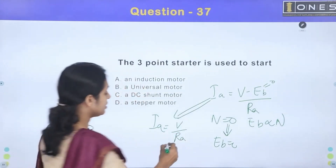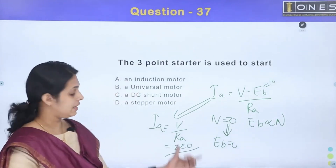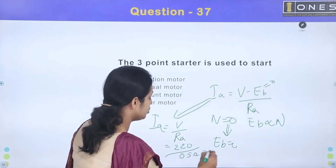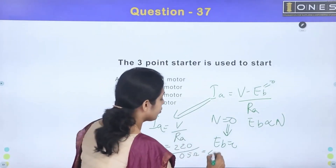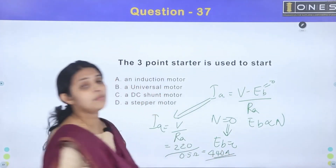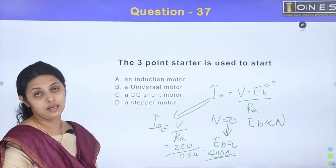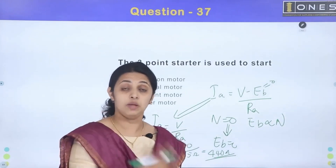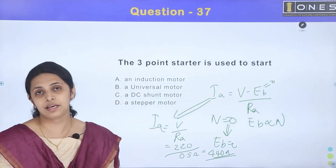For example, if supply voltage is 220V DC and armature resistance is 0.5 ohm, the starting current would be 440A. This very high starting current can damage the armature winding.